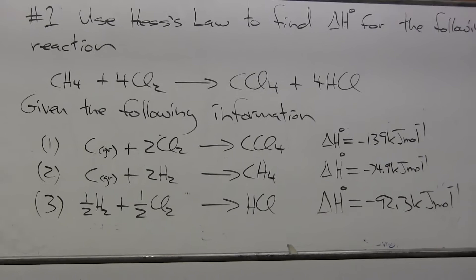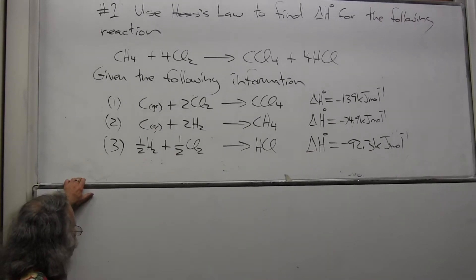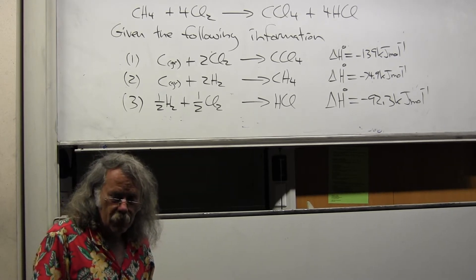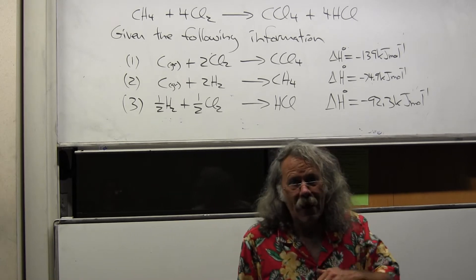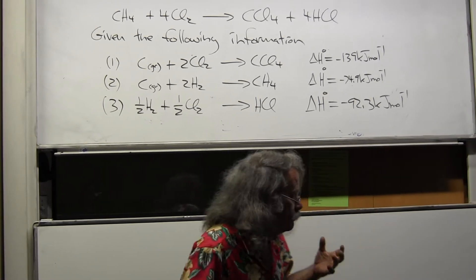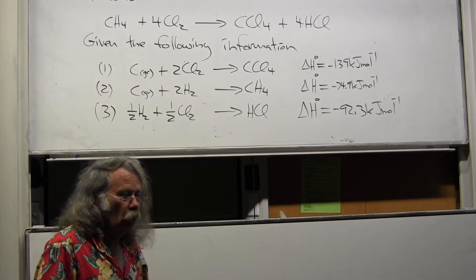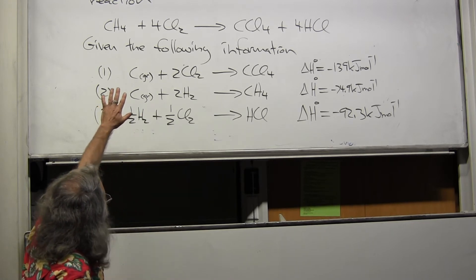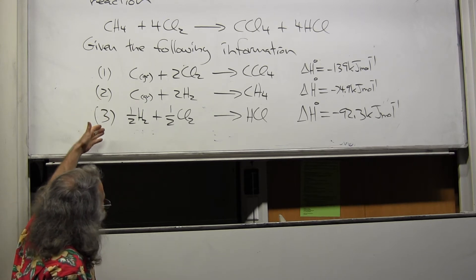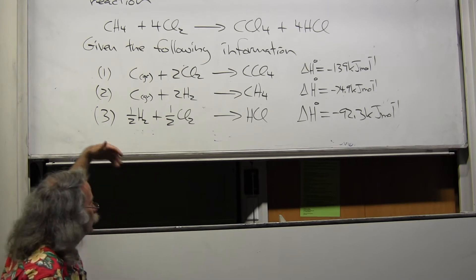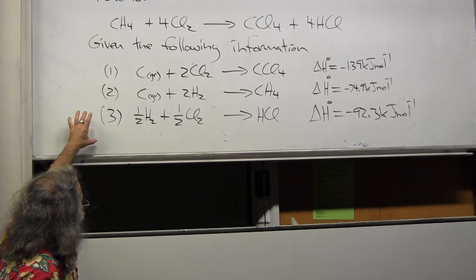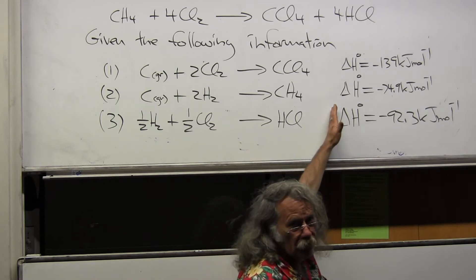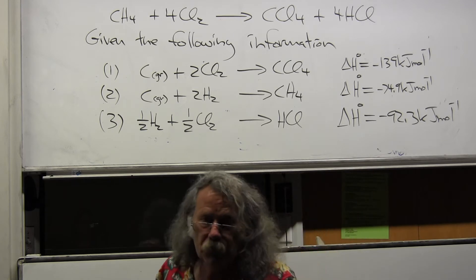This is the given information we are going to use to solve this problem. We are taking advantage of the fact that enthalpy is a state function. All state functions are path independent and additive, meaning the enthalpy will be the same regardless of which path we use. So I can express this target reaction as a sum of these three reactions, and whatever I did to those reactions to make it happen, I do to the enthalpy.